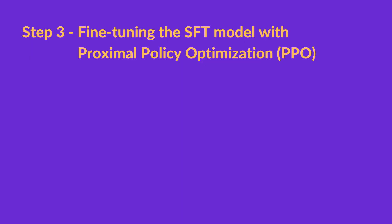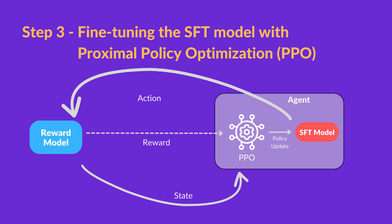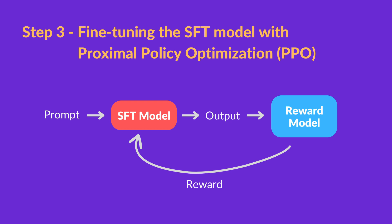The third and final step is fine-tuning the SFT model using Proximal Policy Optimization, or PPO. In this step, the PPO model is initialized from the SFT model, and the value function is initialized from the reward model. The environment is a bandit environment, which presents a random prompt and expects a response to the prompt. Given the prompt and the response, it produces a reward determined by the reward model, and the episode ends.